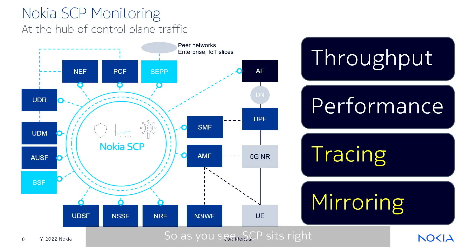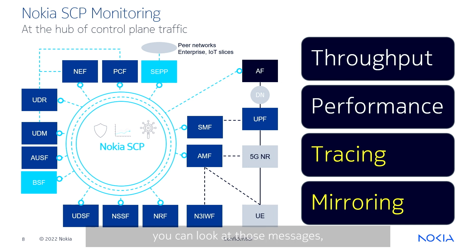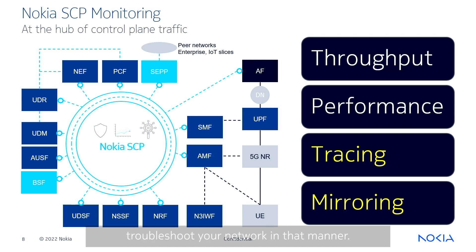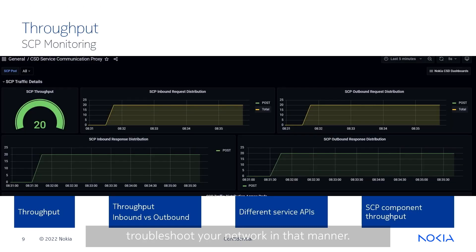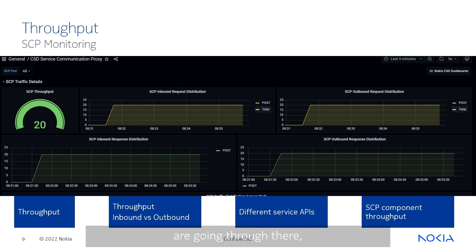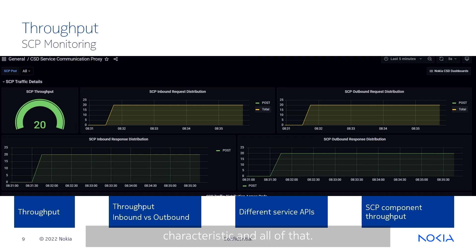SCP sits right in the middle of a network where all sorts of messages are going through, which means that you can count those messages, you can look at those messages, you can inspect where things might be going wrong, and you can help troubleshoot your network. This quick screenshot shows how we know how many total messages are going through, how many are succeeding, how many are failing, and what the performance characteristics are.